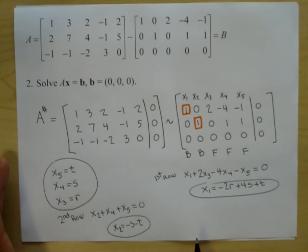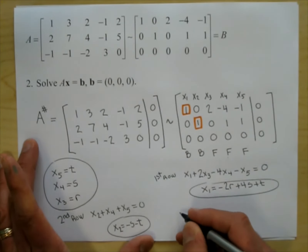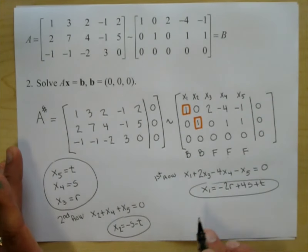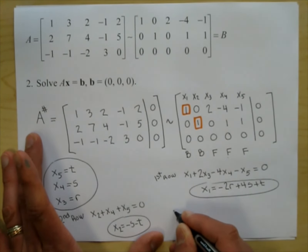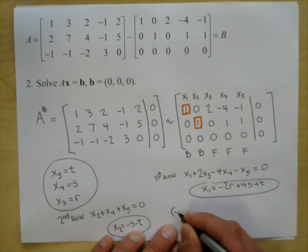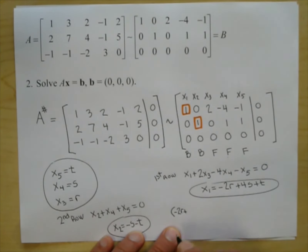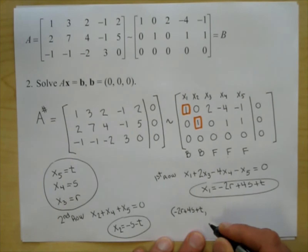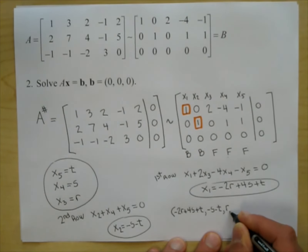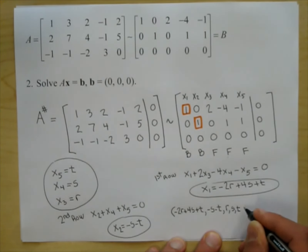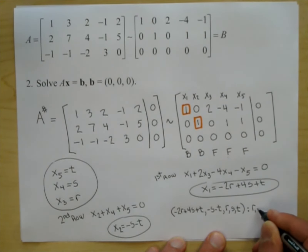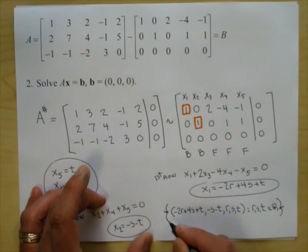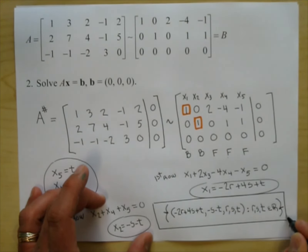This system has infinitely many solutions — we saw that right when we had a free variable. The solution is the set of five-tuples: negative 2r plus 4s plus t, negative s minus t, r, s, t, where r, s, t are elements of the real numbers.